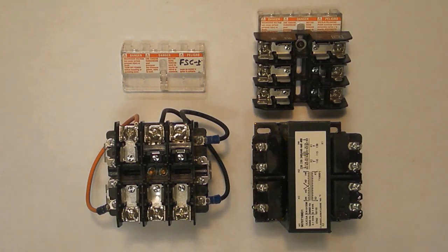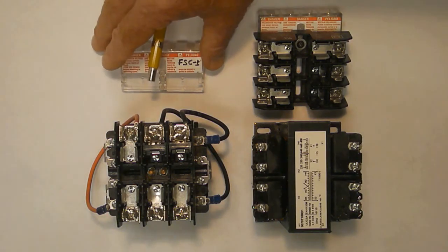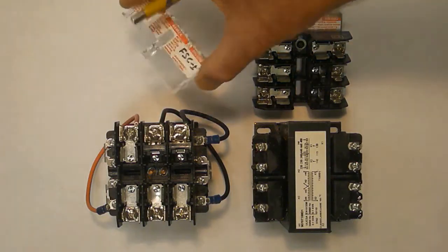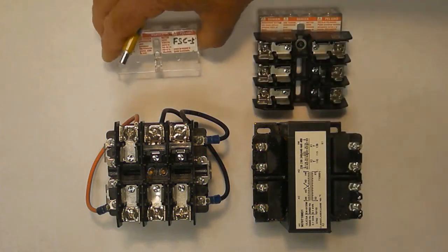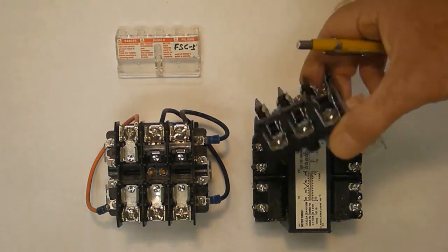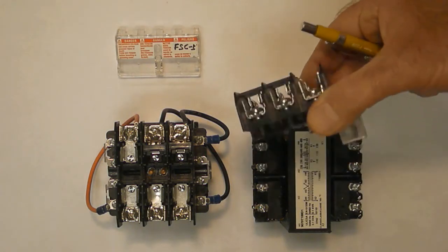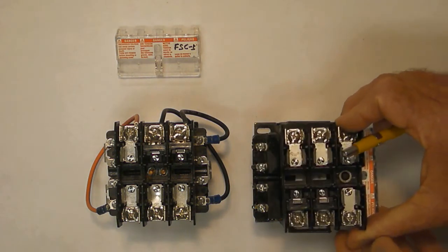The accessory fuse block kits utilize a 9070FSC type finger safe cover on the terminal block to provide a mounting means for the fuse block. The fuse block is screwed onto the finger safe cover to create a one-piece assembly that snaps onto the terminal.